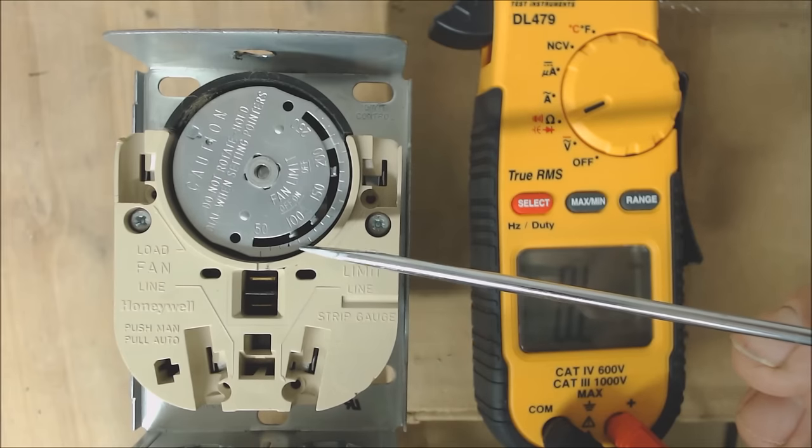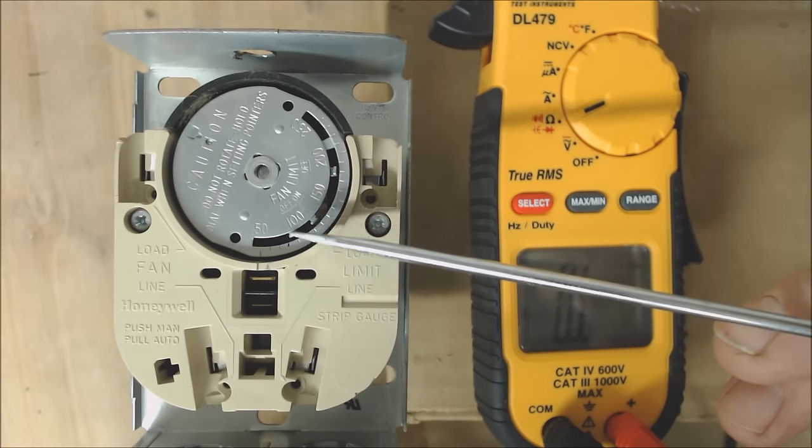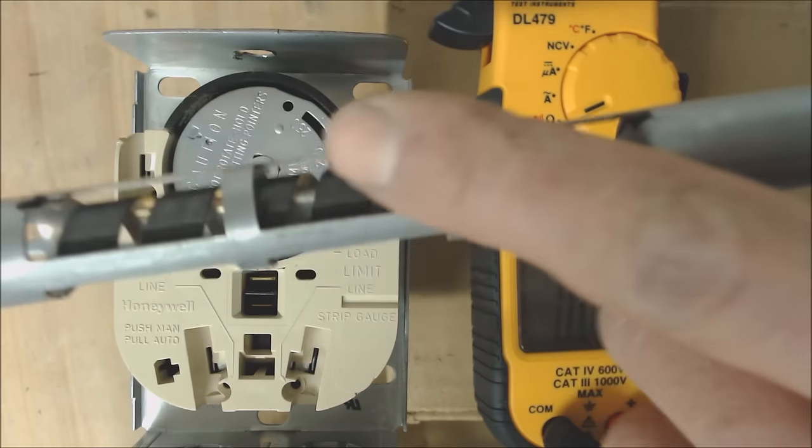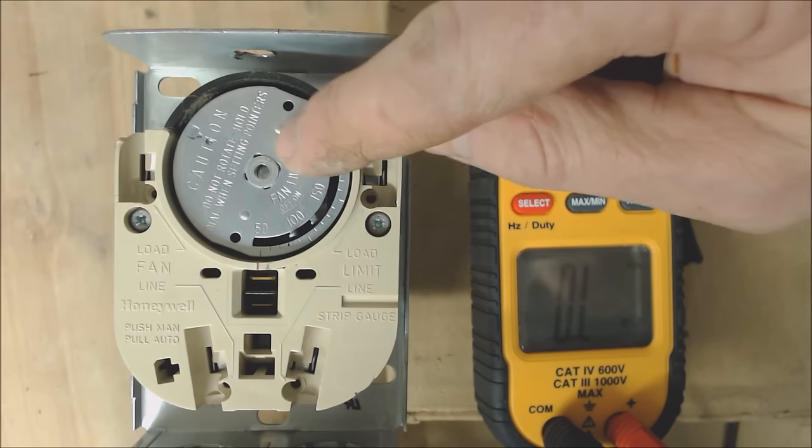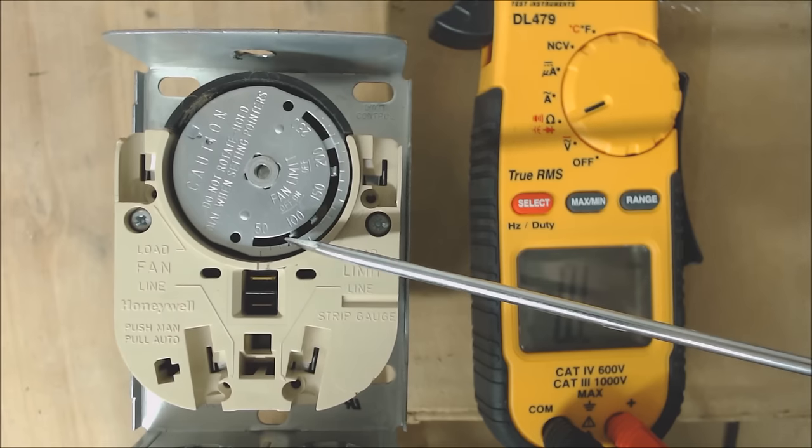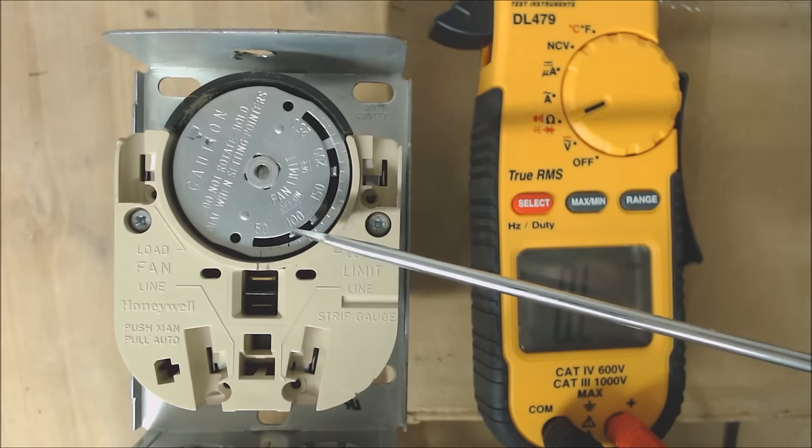Now the reason that we have this set at 90 degrees for when the fan turns off is because sometimes the adjustment for the bimetal might get a little off, and we want to make sure that our fan actually does shut off. We want to make sure that this 90 degrees is higher than what the temperature is set at on the thermostat.